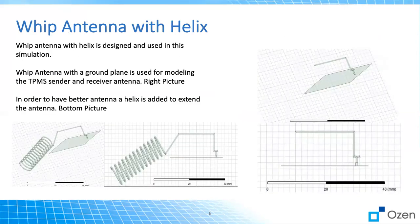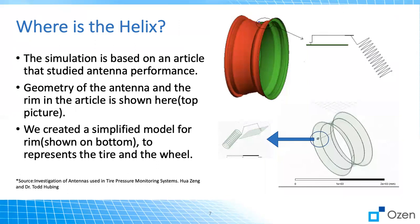So in this simulation, we use the same concept. We use a whip antenna as you can see here. It's a ground and then a whip antenna on top. This is the front view and then we added a helix antenna here. And there are different parameters for this helix antenna that we're going to talk about soon.